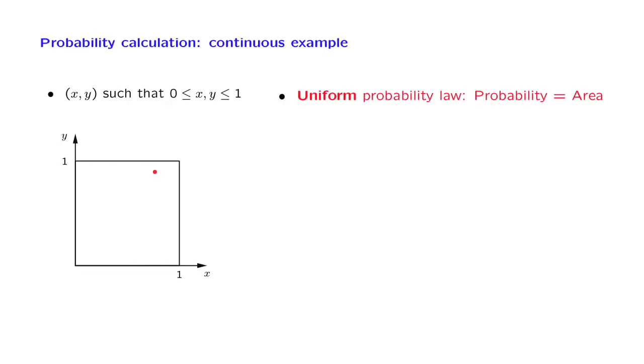So if we have some subset lying somewhere here, and we ask what is the probability that we fall into that subset, the probability is exactly the area of that particular subset. Once more, this is an arbitrary choice of a probability law. There is nothing in our assumptions so far that would force us to make this particular choice, and we just use it for the purposes of this example. So now let us calculate some probabilities.